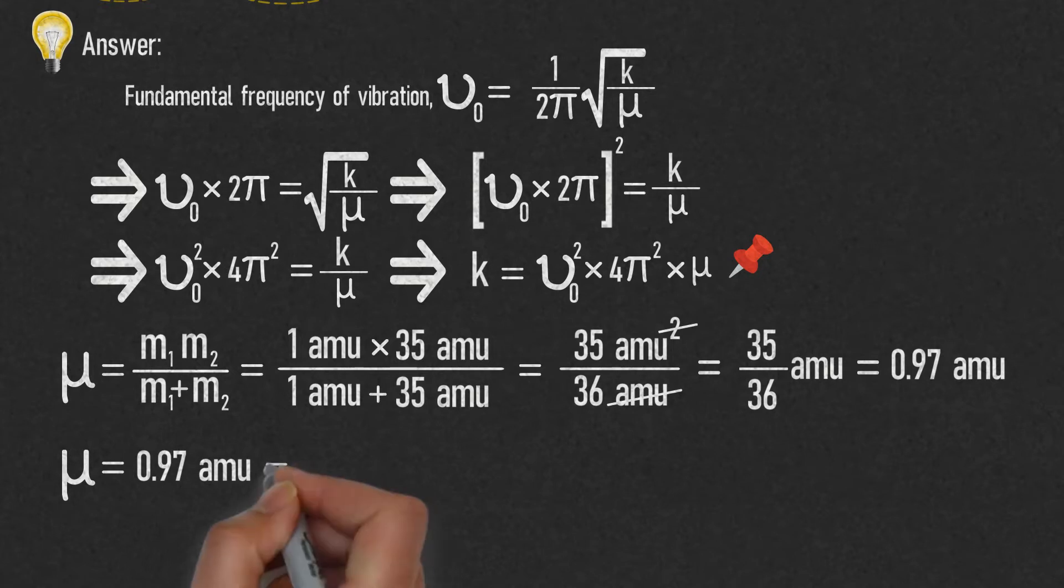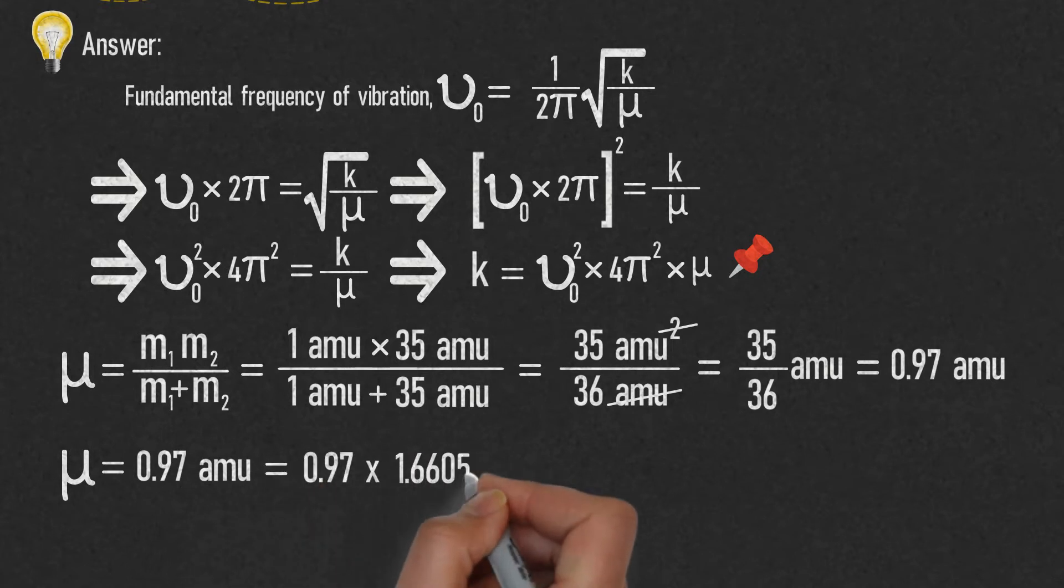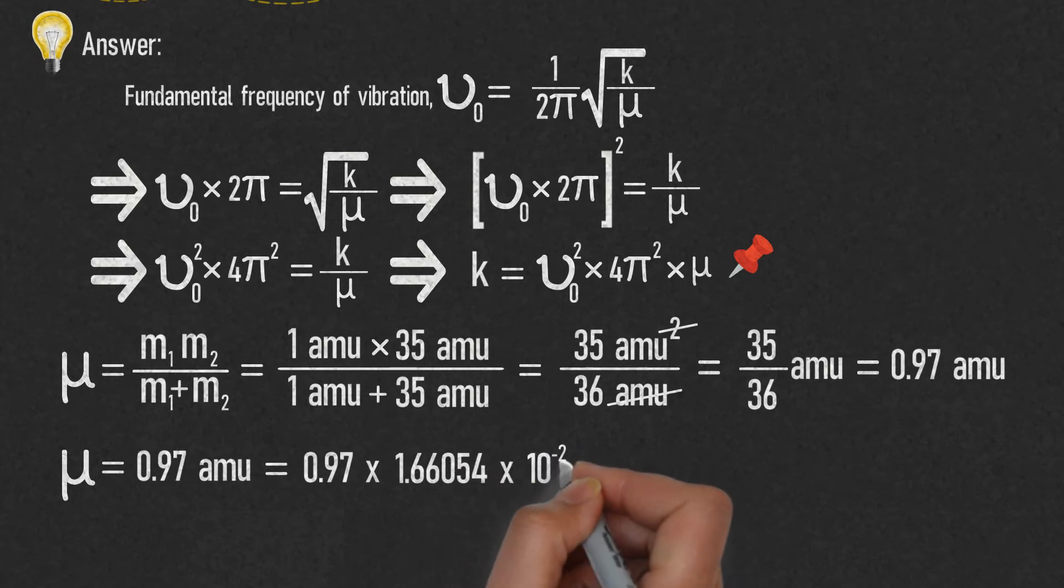Converting it into SI unit, we will get μ = 0.97 × 1.66054 × 10⁻²⁷ kg. Let us pin this equation.